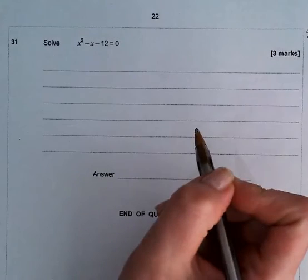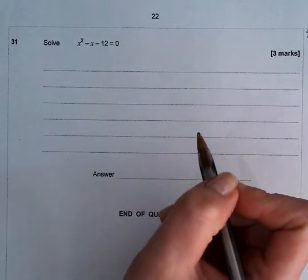We need to solve x² - x - 12 = 0, and to be able to do that, we need to factorize.